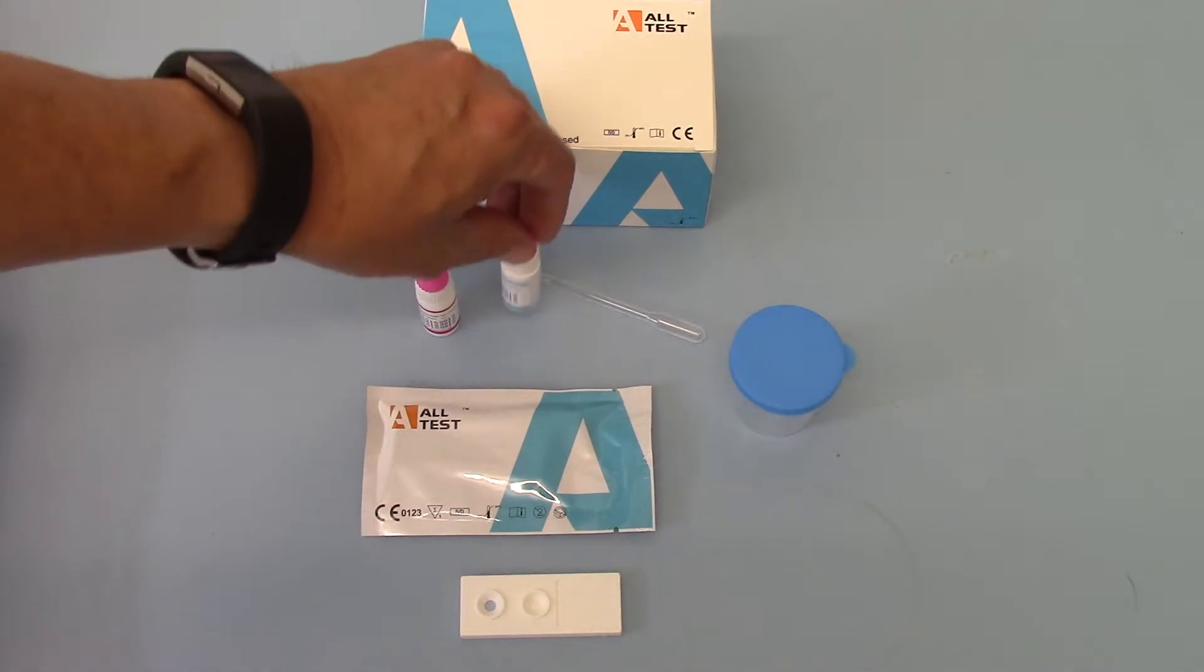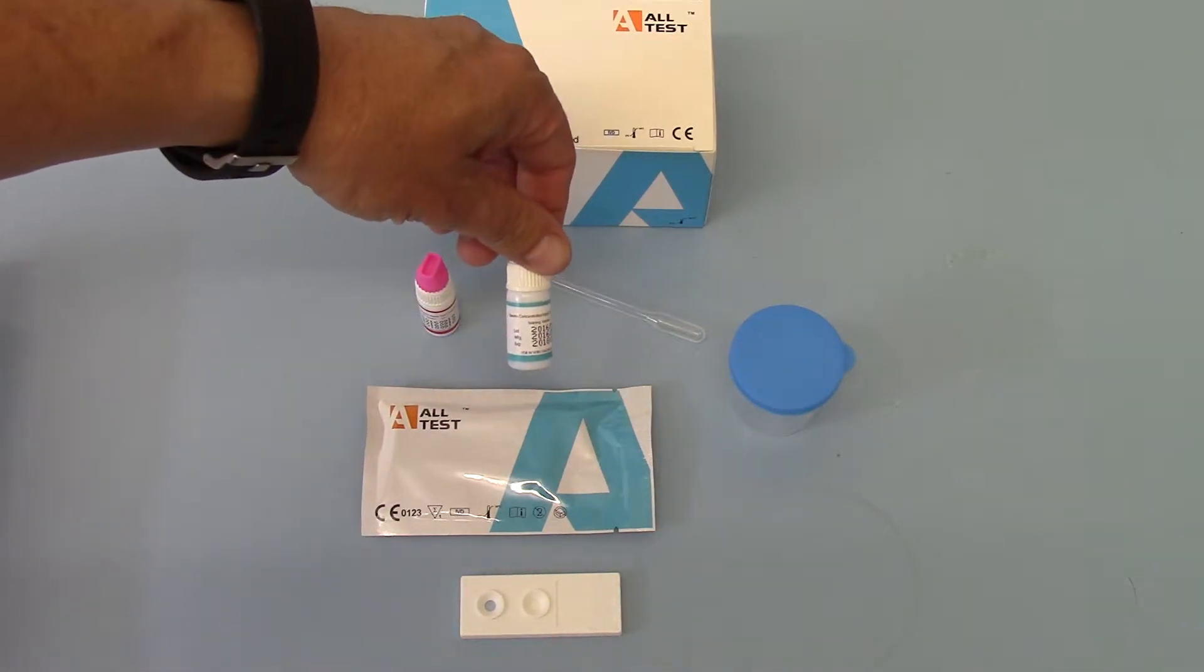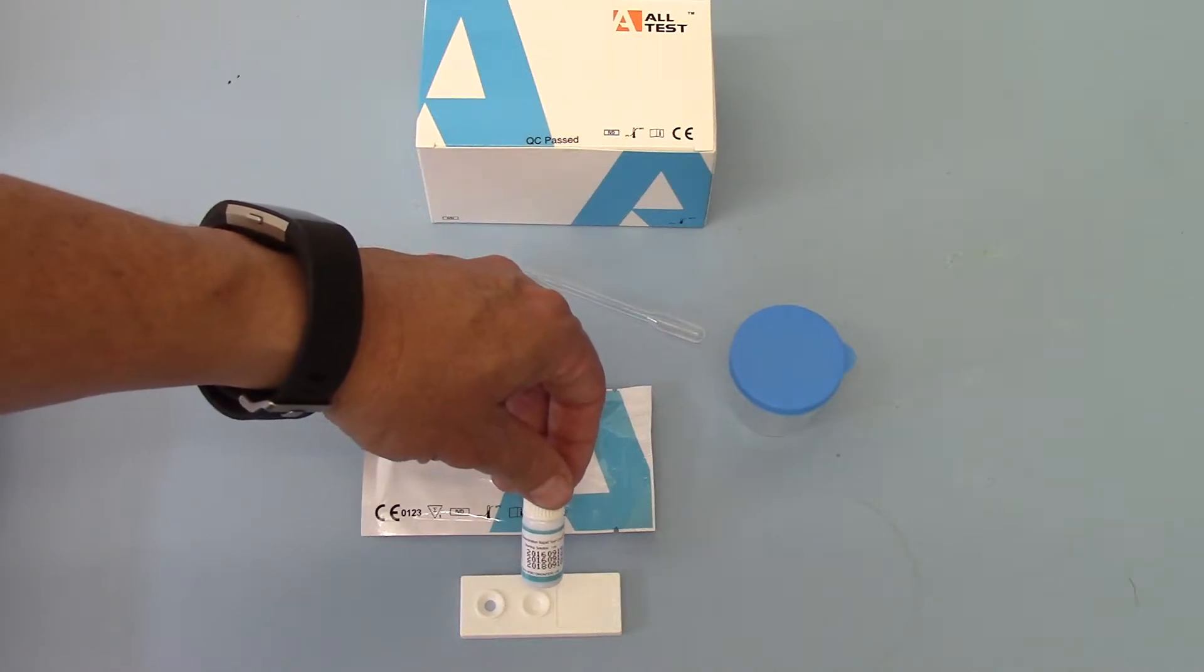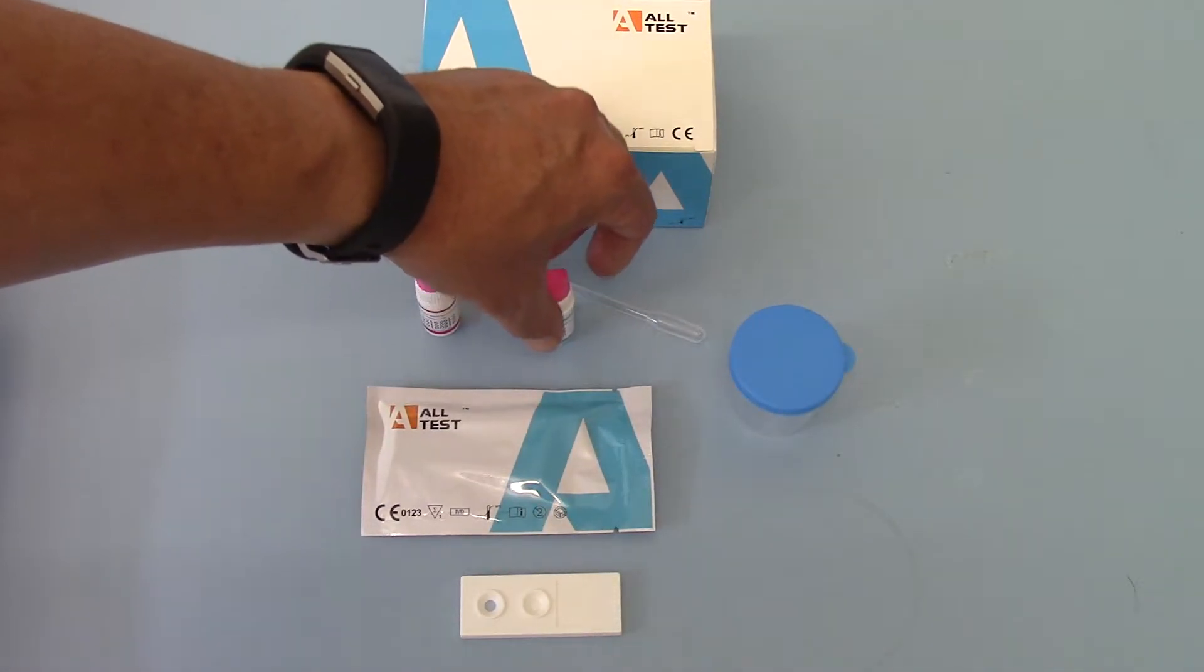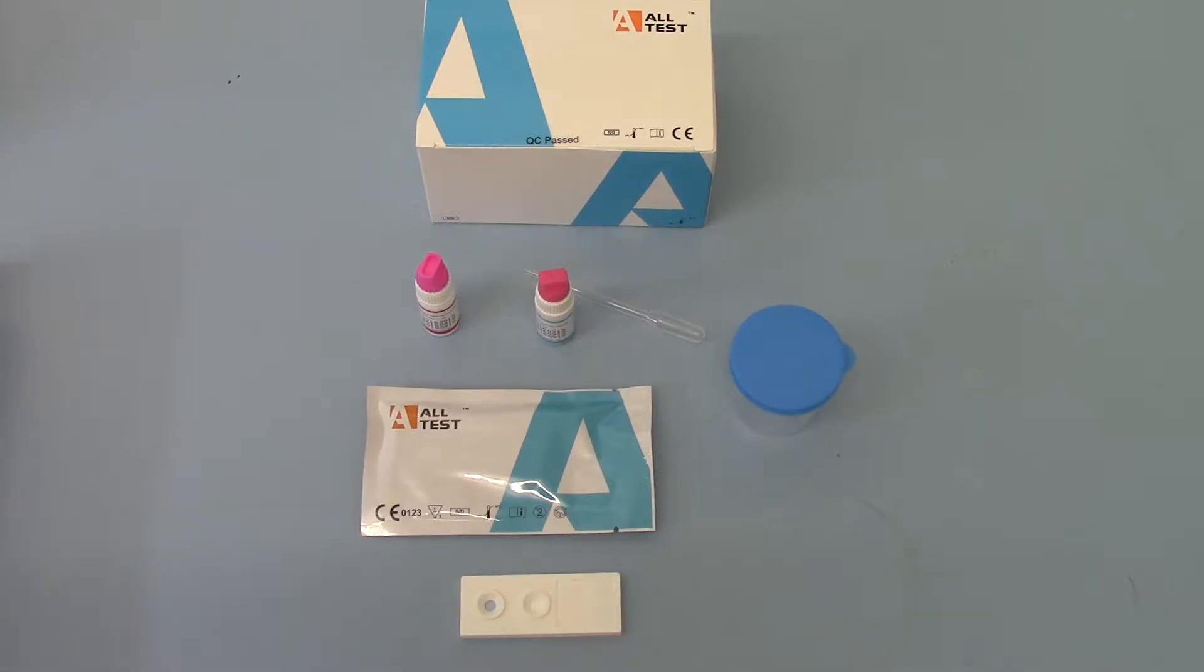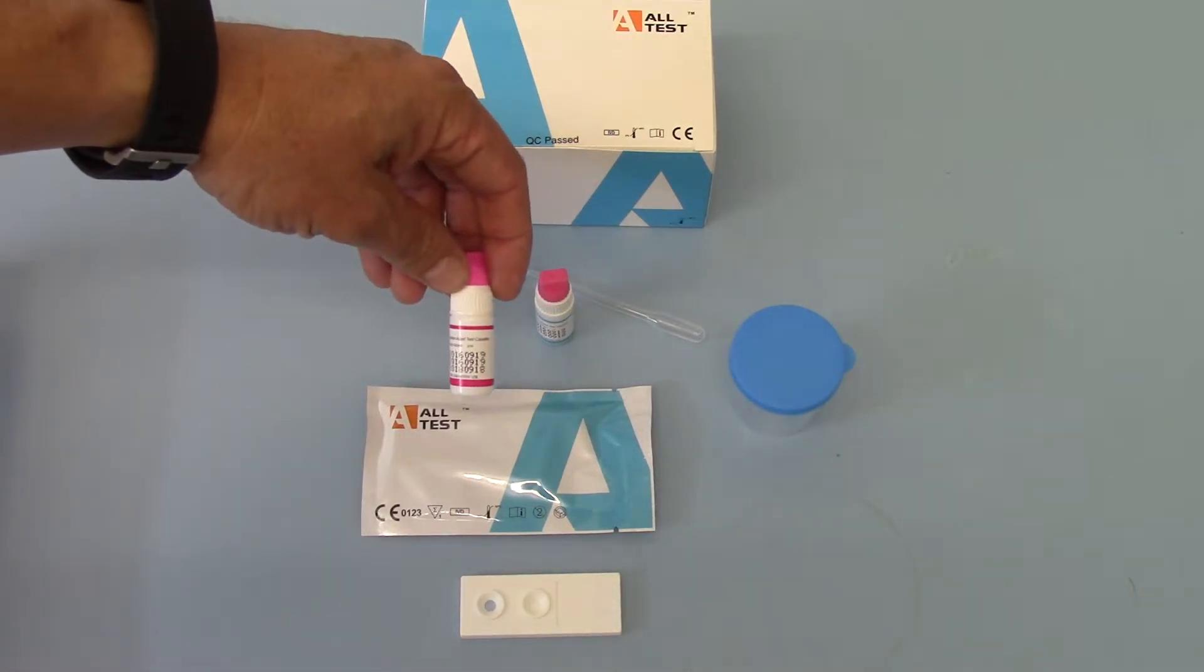After one to two minutes you take your blue staining solution and add three drops to sample well A. You leave that to soak in for one to two minutes.